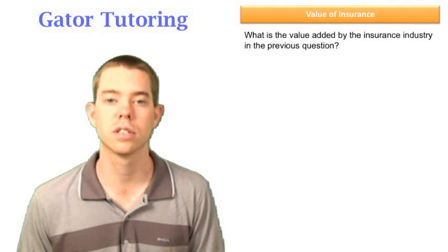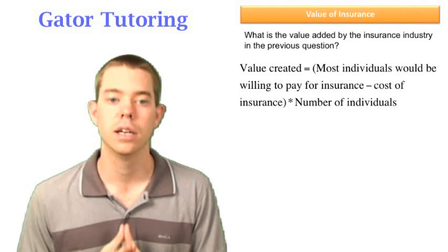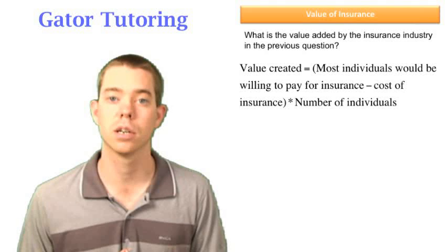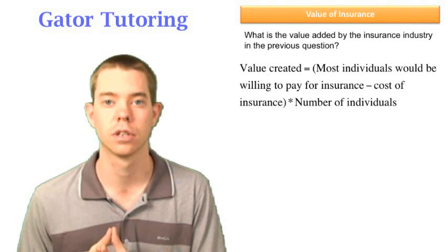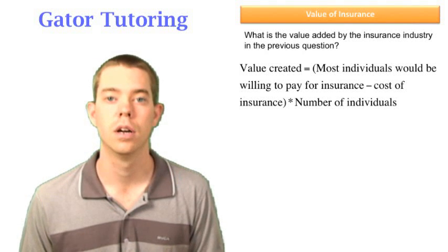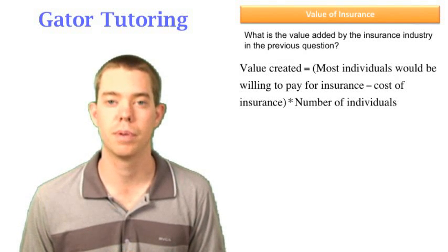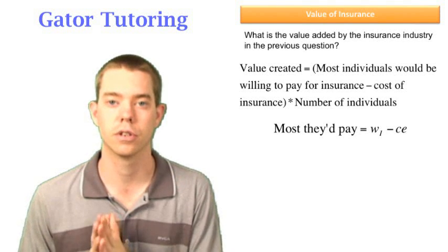So the last question says, what is the value added by the insurance industry in this previous question? Well, the value created is the most that individuals would be willing to pay for insurance minus what they actually pay for insurance multiplied by how many individuals or how many customers are in the market. Let's define the most they'd be willing to pay for insurance. That is the wealth initial minus the certainty equivalent.